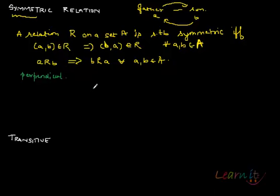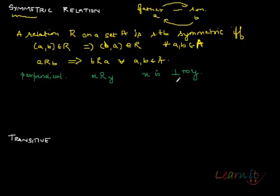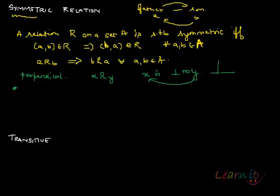For example, if we take perpendicular lines — the set of all lines in a plane and we define a relation XRY such that X is perpendicular to Y — if X is perpendicular to Y, then Y is also perpendicular to X. So this would be a symmetric relation on lines.